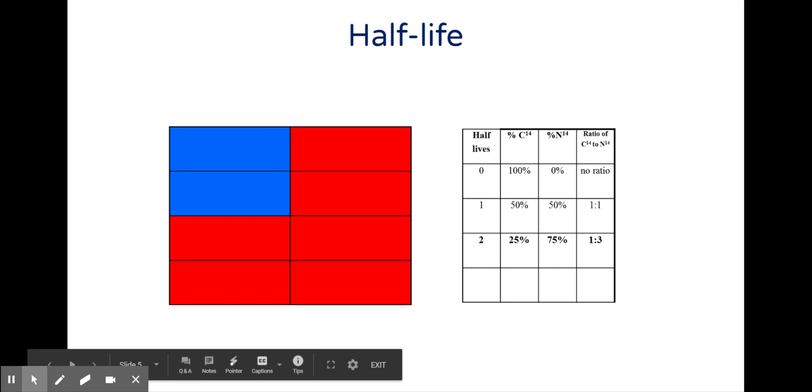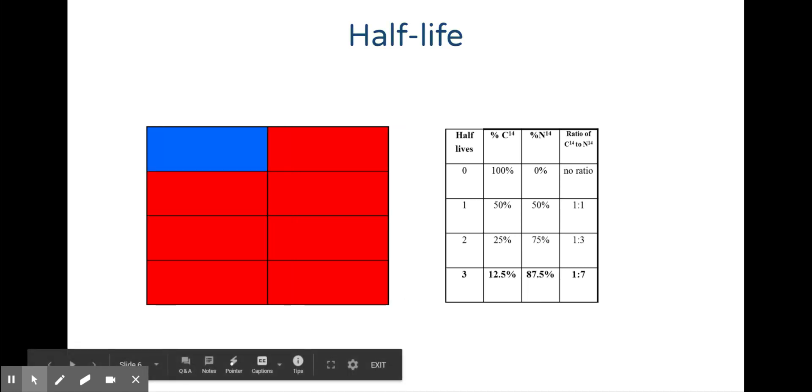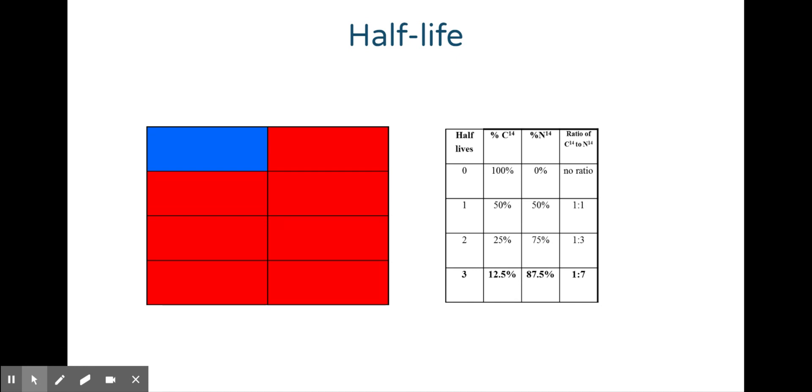After two half-lives, there's 25% of carbon-14 remaining and 75% has transmuted to nitrogen-14. After three half-lives, 12.5% of carbon-14 is remaining and 87.5% has transmutated into nitrogen-14.